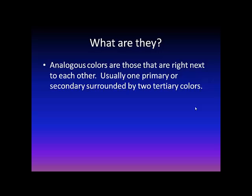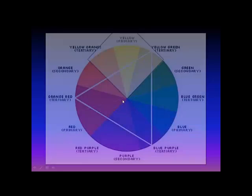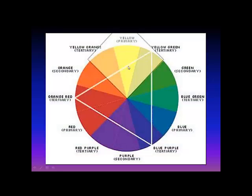Sounds like a lot of stuff, right? Well, actually it's pretty easy. Here you have your primary colors: yellow, red, and blue. And your secondary colors: orange, purple, and green. And anything that surrounds these are going to be even more tertiary colors.